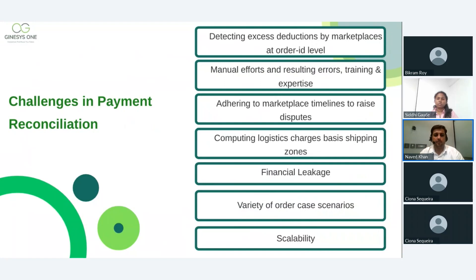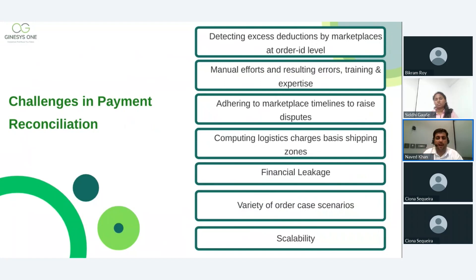The third challenge is adhering to marketplace timelines to raise disputes. Marketplaces have a limited window — typically 30 to 60 days — to report discrepancies. If reconciliation is not completed on time, these deadlines get missed and sellers end up receiving no revenue that they were actually expecting. The fourth challenge is computing logistics charges based on shipping zones — local, regional, and national — which is again a manual, time-consuming task that Browntape can handle in just a few clicks.